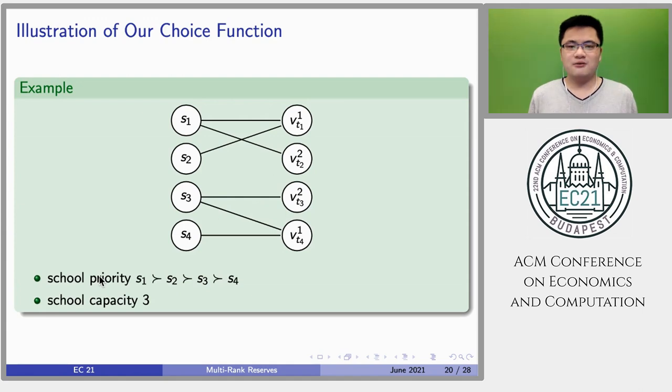Consider this example in the figure. There are four students and four types. The ranked reservation graph is shown in the figure. The school priority ordering over students is S1, S2, S3, and S4. The school capacity is only three. Thus, one student cannot be matched.